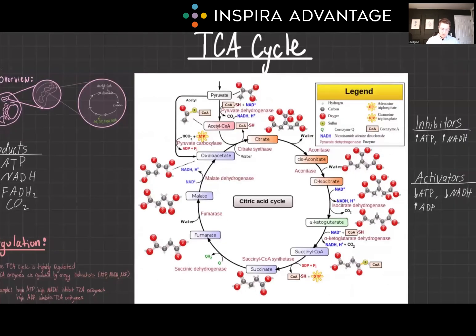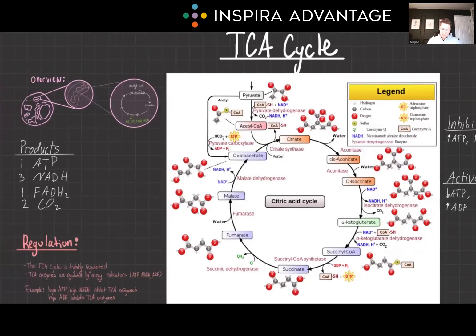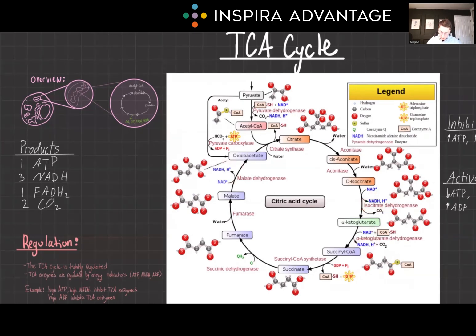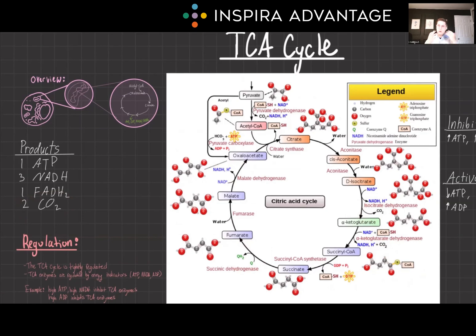It's important to know your total products. From one turn of the TCA cycle, we get one ATP — well, truly it's a GTP, but the MCAT uses ATP and GTP interchangeably. We also make three NADH and one FADH2, shown as Q on the diagram. We're also releasing two CO2s as waste, from isocitrate dehydrogenase and alpha-ketoglutarate dehydrogenase. This makes sense — we're losing a carbon from each of those molecules, so we breathe it out.